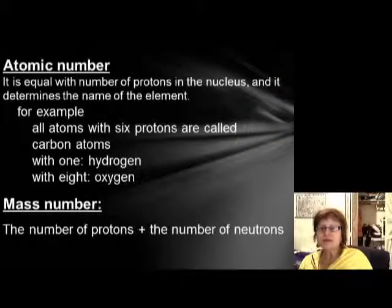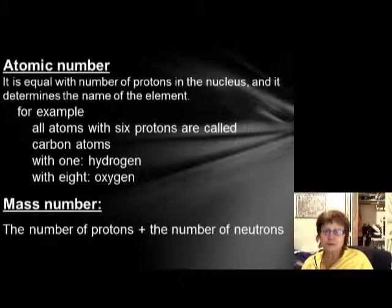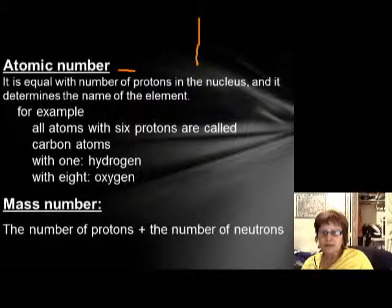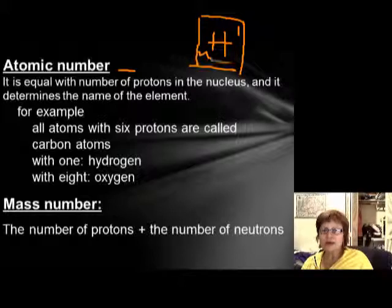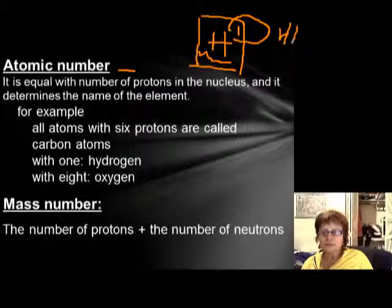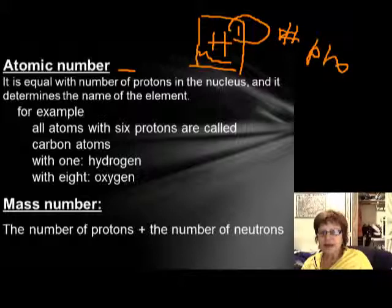Before jumping into bonding, let's cover a few other things. One is the atomic number. If you look at the periodic table, each element has a square with the element symbol, the atomic number above it, and the atomic weight below it. The atomic number equals the number of protons in that atom.